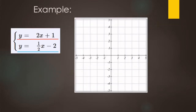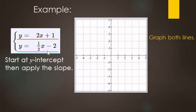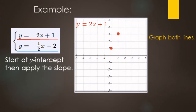Looking at this system of equations, we're going to solve it by graphing both lines. The first equation is in slope-intercept form, so we start on the y-intercept, which is 1. The slope is 2, so rise over run is up two over one. There's our line — this red line represents all the ordered pairs that make the top equation true.